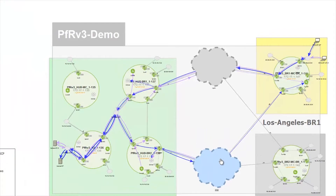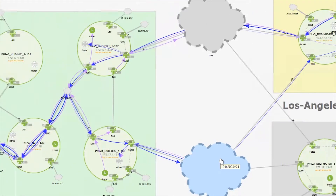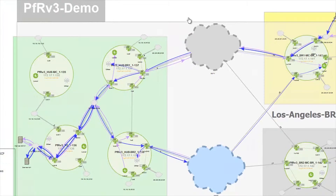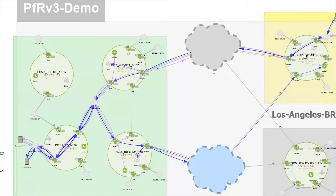For this scenario, PFR version 3 has a policy to protect primarily a voice class marked EF as well as a video class marked AF31. In our search string we're looking very specifically at our various sites from Palo Alto, zooming in on traffic to and from Los Angeles for those particular markings of EF and AF31.